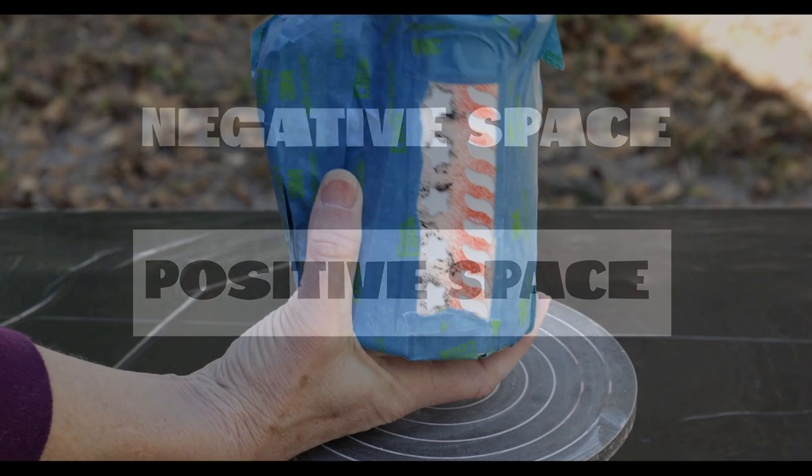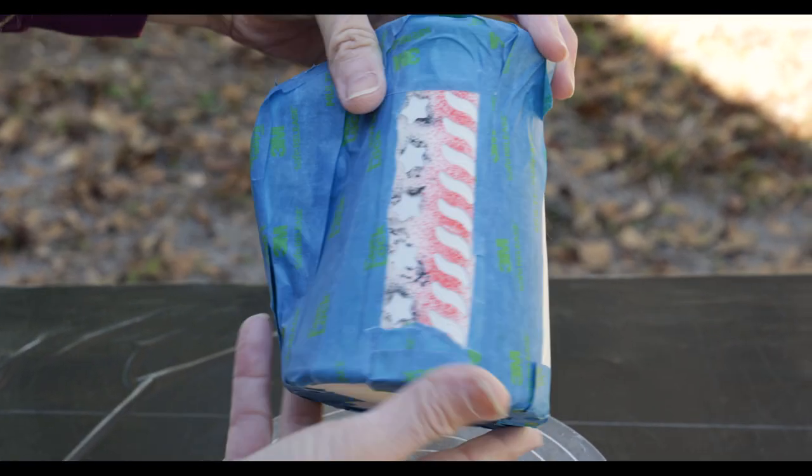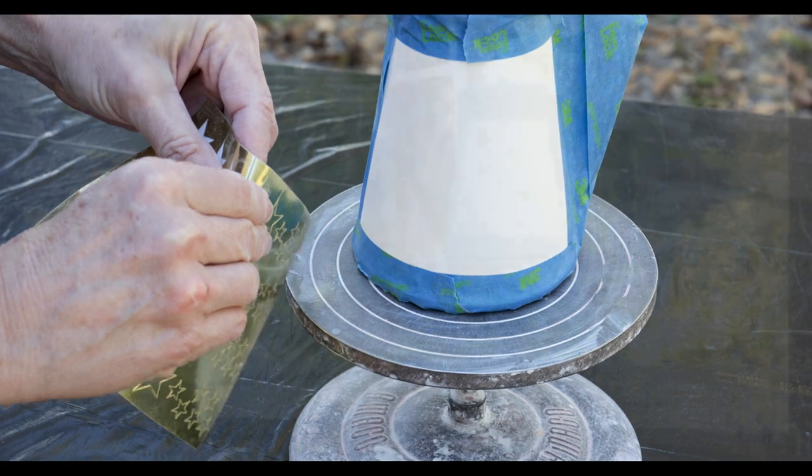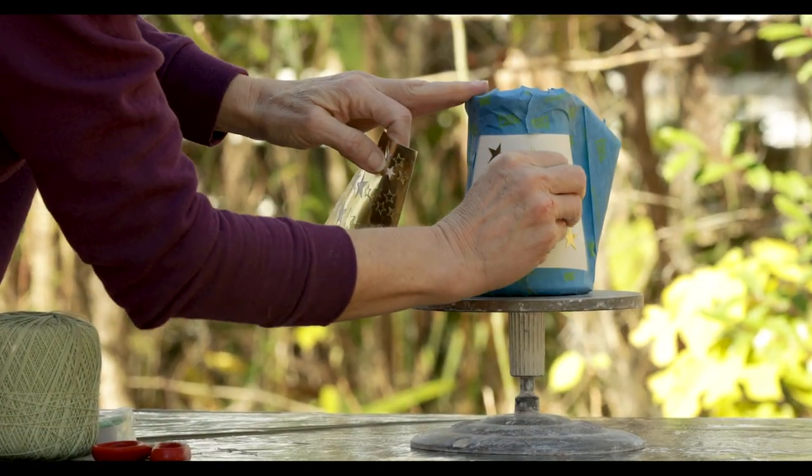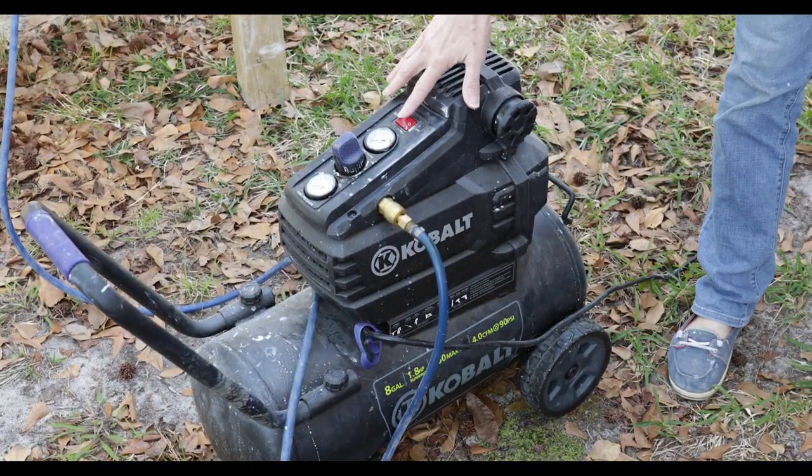On number six, we'll be experimenting with positive and negative space. On one side of the mug, I'll spray slip to the positive areas of a flatly taped down stencil. On the other side, I'll apply gold stars so that the slip will cover the negative areas around the stars. Notice that I taped up all the other parts of the mug that I wanted to remain white.